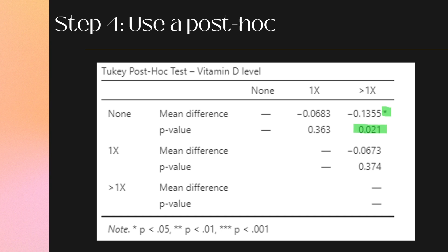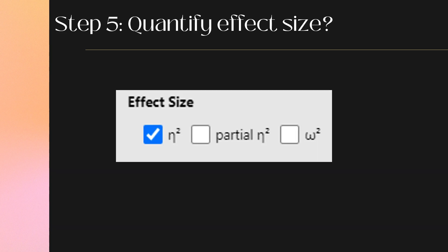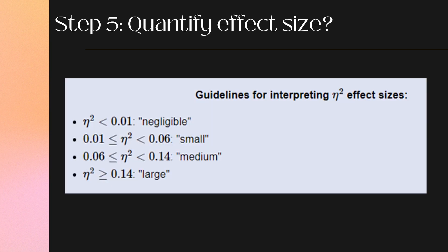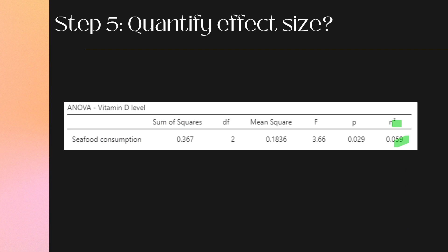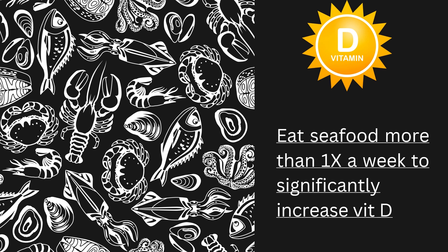Once our Tukey test is on, we get a table showing all possible comparisons and indicating where significance is occurring. We can see that significance is occurring between the group that eats seafood more than once a week and the group that doesn't eat it at all. There is no significant difference between the group that only eats it once a week and the group that doesn't eat it at all. For effect size, we turn on eta squared — symbolized by the Greek letter that looks like a little fancy n. Our eta squared is 0.059, right on the border of a medium effect. Since we are honest, we won't round up and will call it a small effect. So, to boost vitamin D through seafood, you would need to eat it more than once a week to see a noticeable difference.